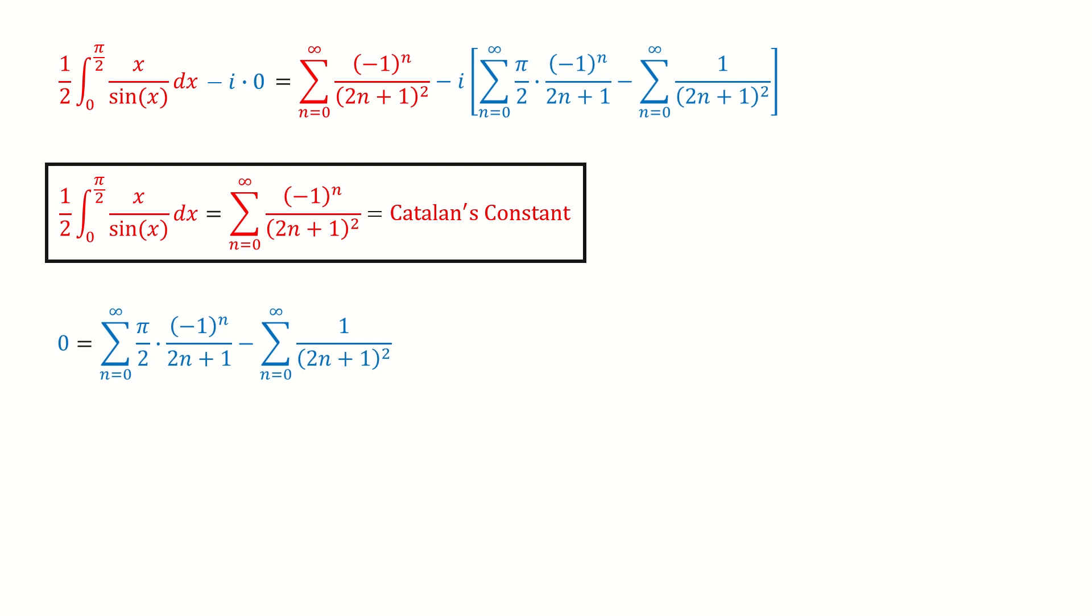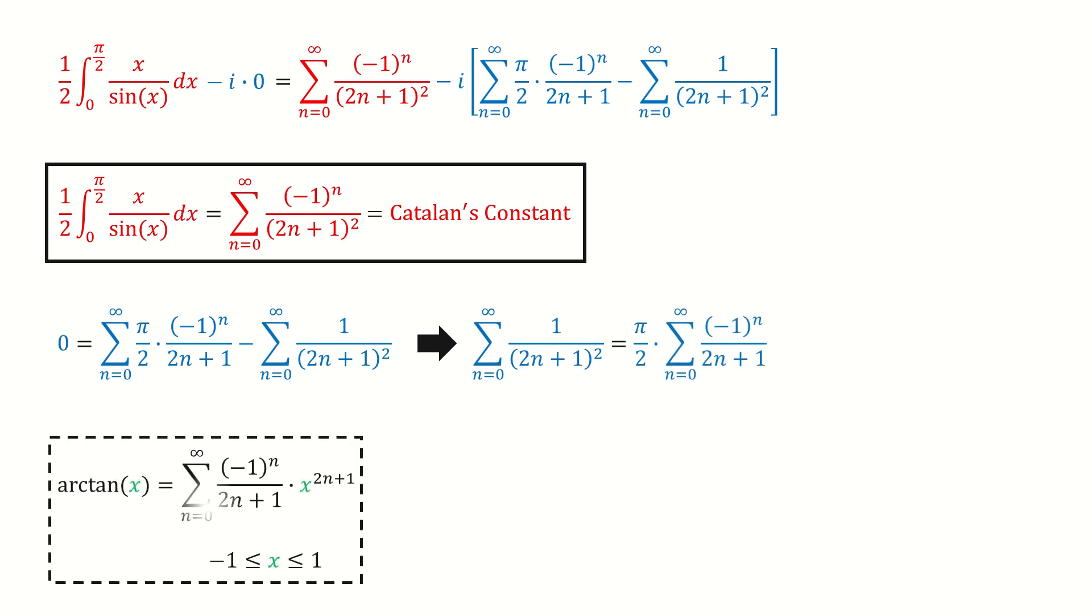Then let's look at this blue equation. First, we write it into this way. Recall the Maclaurin series for the arc tangent function. If we set x equal to 1, then we got here. We know the arc tangent 1 is pi over 4. So we plug in pi over 4 to replace it, and we got this result. So we got a byproduct from this blue equation.